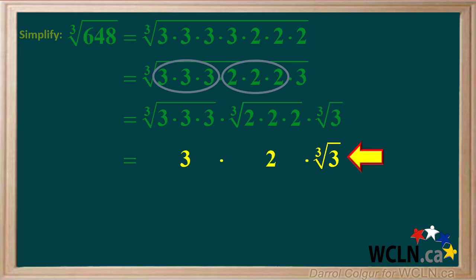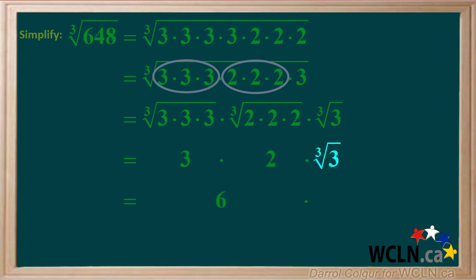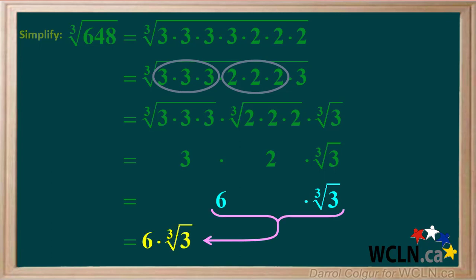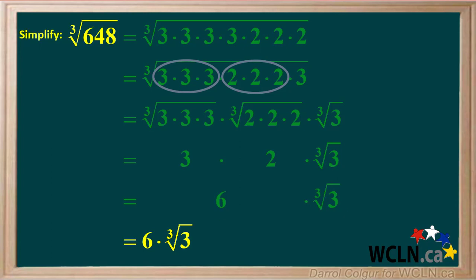Now we're left with 3 times 2 times the cube root of 3. 3 times 2 is equal to 6, and the cube root of 3 is copied down. So we're left with 6 times the cube root of 3. The cube root of 648 can be simplified to 6 times the cube root of 3.